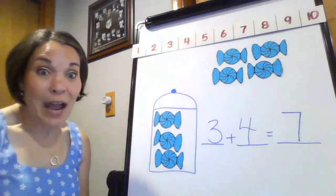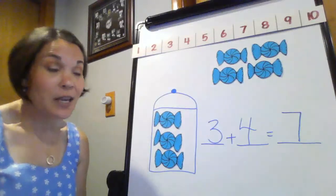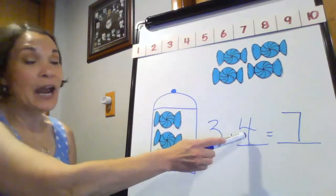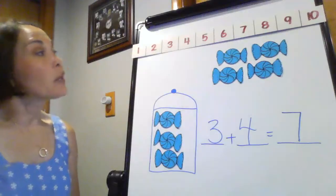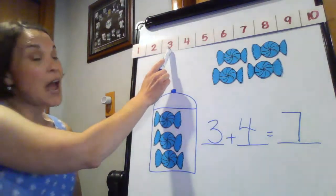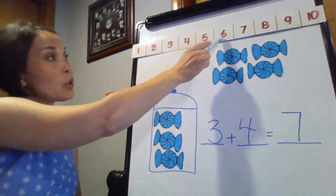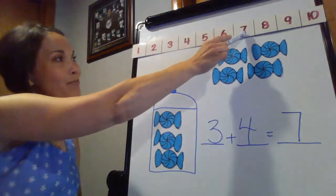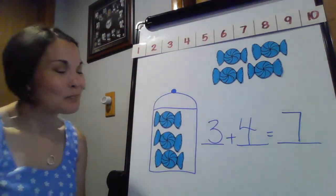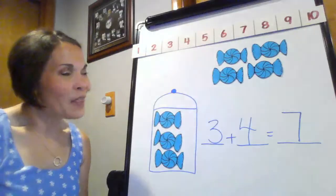Let's use the number line and the counting-on strategy to help us. I'll start with the number three and count on four more: three, and then one, two, three, four — I made it to seven!